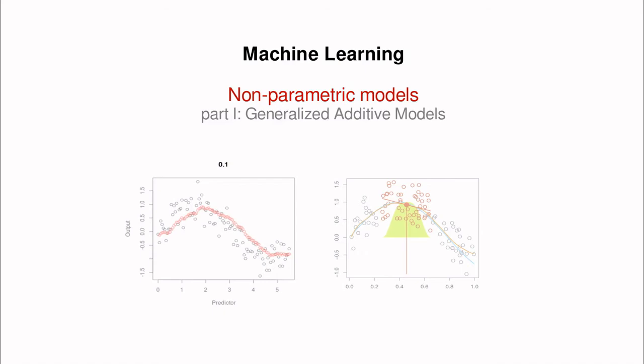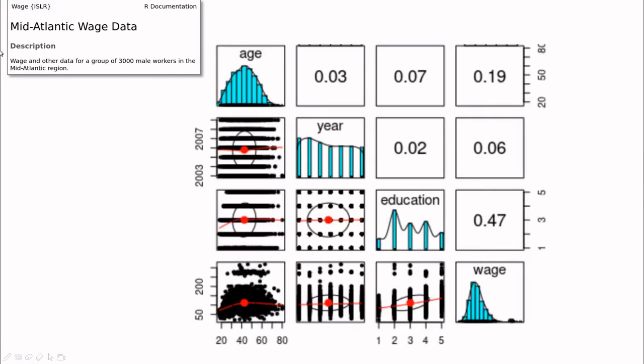Today I'm going to talk about a new type of model called generically non-parametric models. Shifting away from linear regression, we're going to cover generalized additive models. Let's take a look at this data — you can download it automatically in the ISLR library. The idea is to predict the weight of several people for several years according to age and level of education. As you can see, there are no correlations between these variables, which is good.